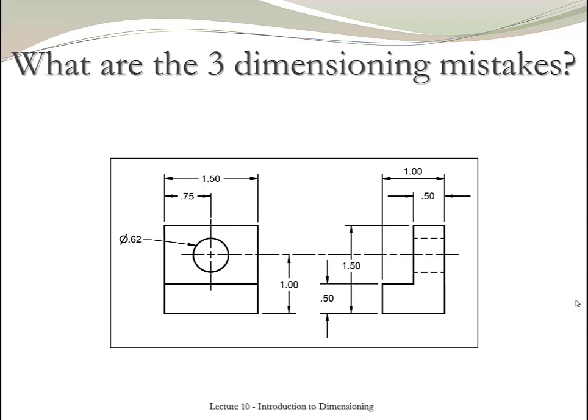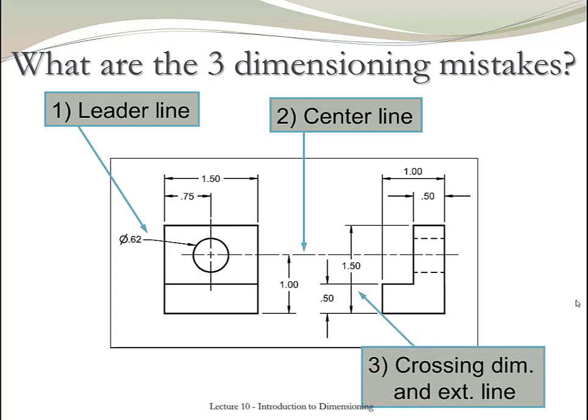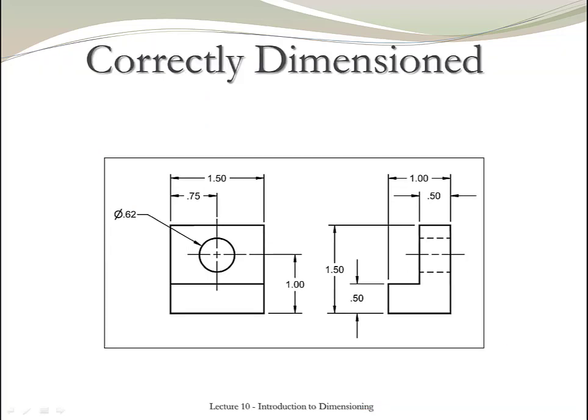Let's now go over this example. What are the three dimension mistakes on this drawing? The first one that we see is that the leader, in this case, does not have an angle between 30 to 60. The second mistake that we see is that we have a center line that goes from the front view to the right view. And the third mistake that we see is that we have dimensions crossing extension lines. This is the final and corrected dimension for that particular example.